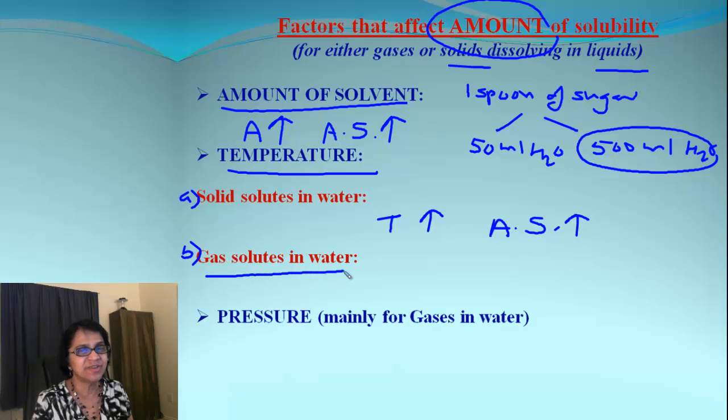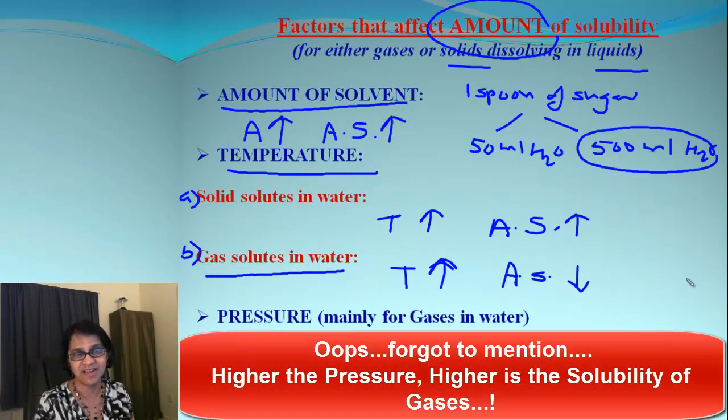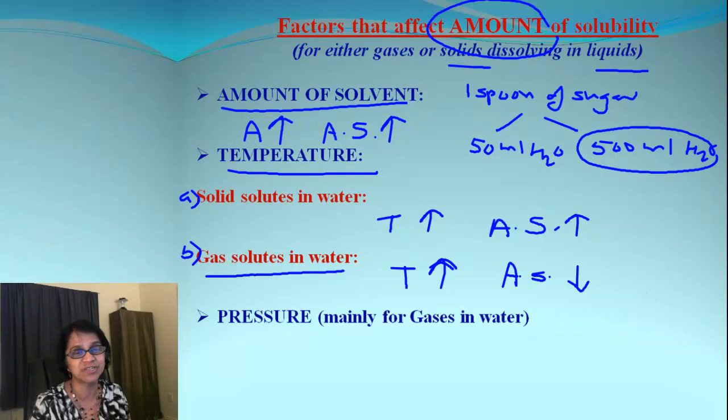But what happens with gas? It's opposite. If temperature goes up, the amount of solute will go down. For example, soda or carbonated drinks are always kept cold. If the temperature is higher, the amount of gas dissolved in water will decrease. So gas will dissolve in water in more quantity if temperature is lower. Higher the temperature, the amount of gas will decrease, opposite to solids.